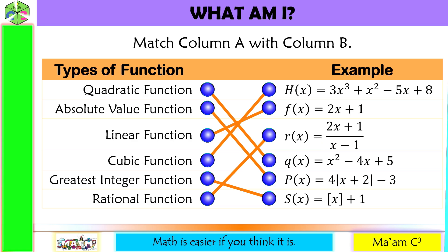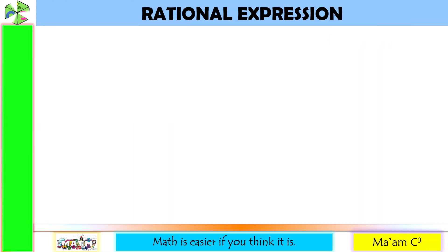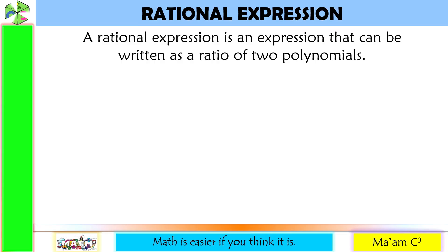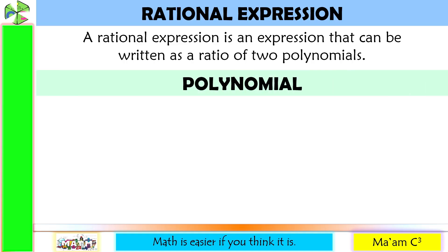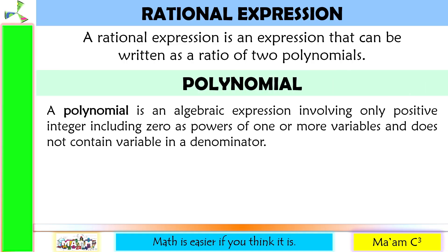Let us define what rational expression is. Rational expression is an expression that can be written as a ratio of two polynomials. But what is a polynomial? A polynomial is an algebraic expression involving only positive integers, including zero, as powers of one or more variables, and does not contain a variable in a denominator. For example, x is a polynomial because the exponent of x is the invisible one, which is a positive integer.